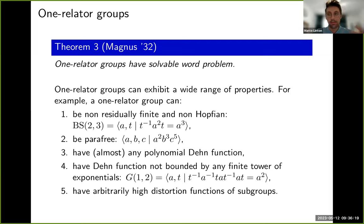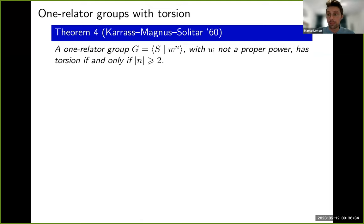In general, one-relator groups can be hard to prove anything for when taken all at once, but if you restrict to a certain subclass there is a chance. One particularly nice subclass is one-relator groups with torsion. In 1960, Karrass, Magnus, and Solitar classified exactly when a one-relator group has torsion.